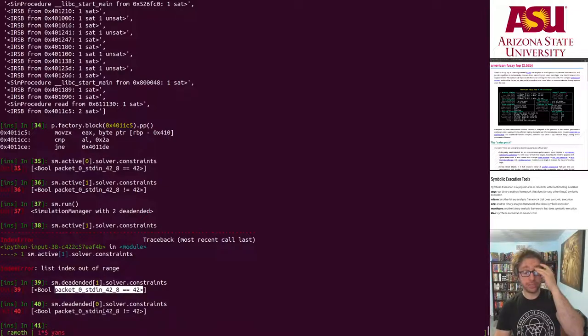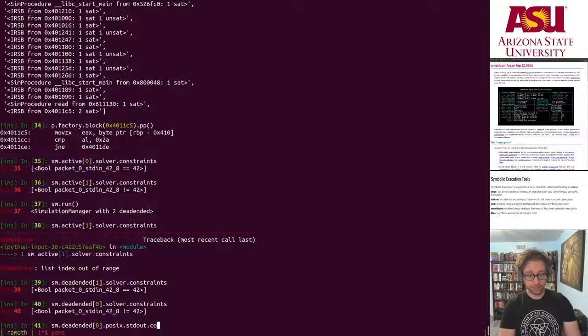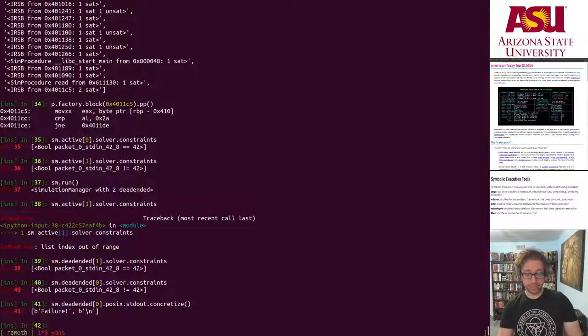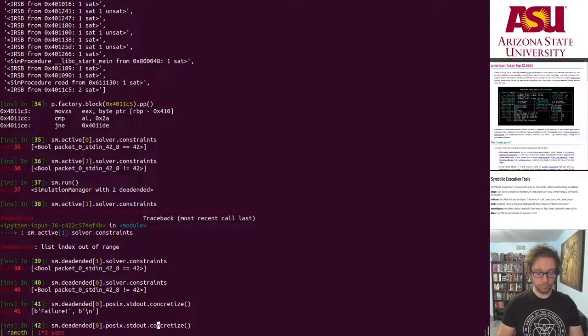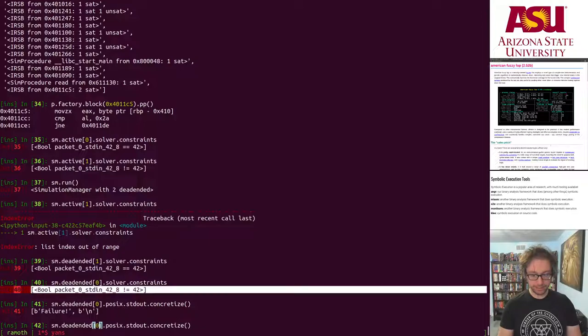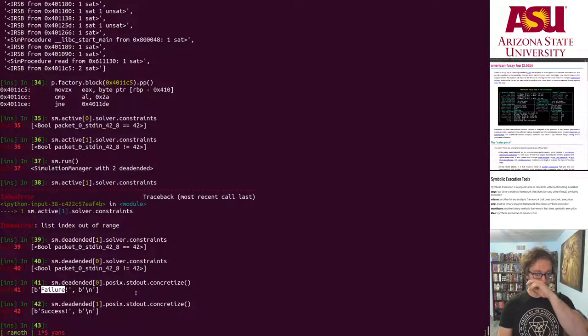Another thing that we can look at is their standard output. You can call concretize. Concretization is the process of querying a constraint solver to solve the formula, to go from, and of course these formulas are very simple, to go from mathematical formula to ones and zeros. On one state, the state that is not 42, it says failure. The state where the standard input was 42, state one, it says success.